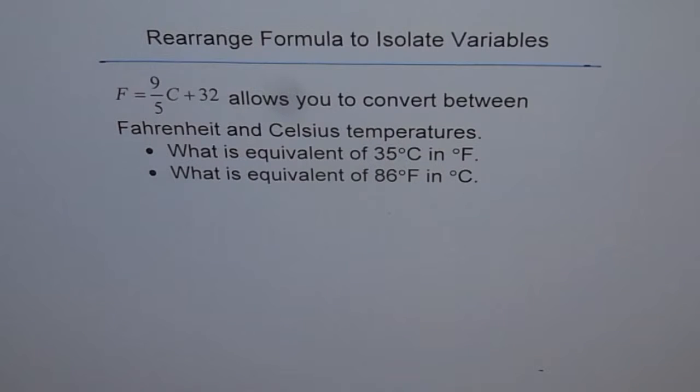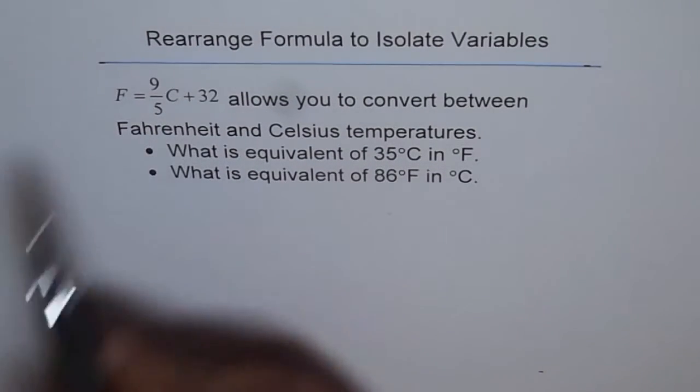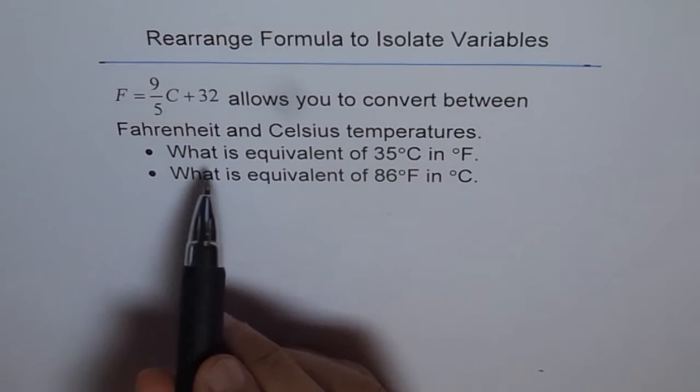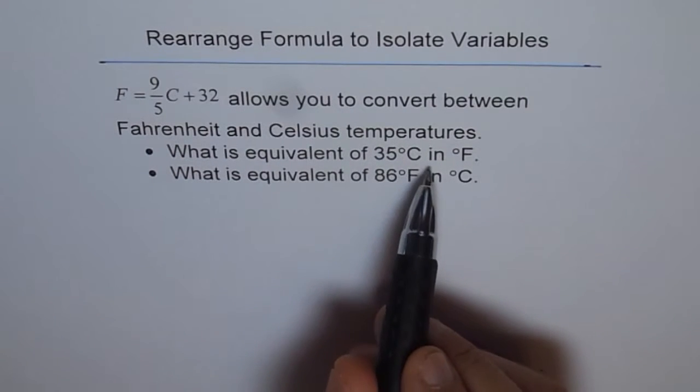So you may be required to convert temperatures from degree centigrade to degree Fahrenheit and vice versa. So let's see how to do it. With this formula, we can convert from degree centigrade to Fahrenheit. So the first part is, what is equivalent of 35 degree centigrade in Fahrenheit?